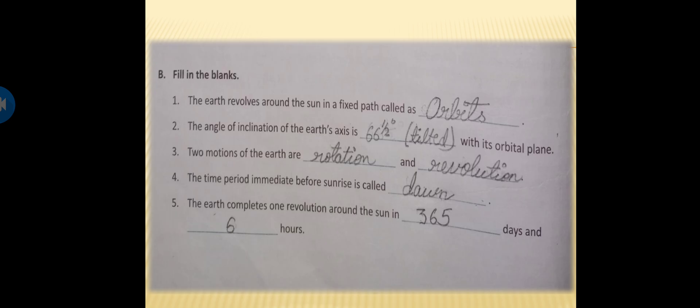Now come to B part, fill in the blanks. So question number 1 is, the earth revolves around the sun in a fixed path called orbits. The spelling of orbit is O-R-B-I-T-S. Now come to question number 2. The angle of inclination of the earth's axis is, what is the angle? That is 66 and half degree. But we can also write, tilted with its orbital plane. So the angle of inclination of the earth's axis is 66 and half degree with its orbital plane.